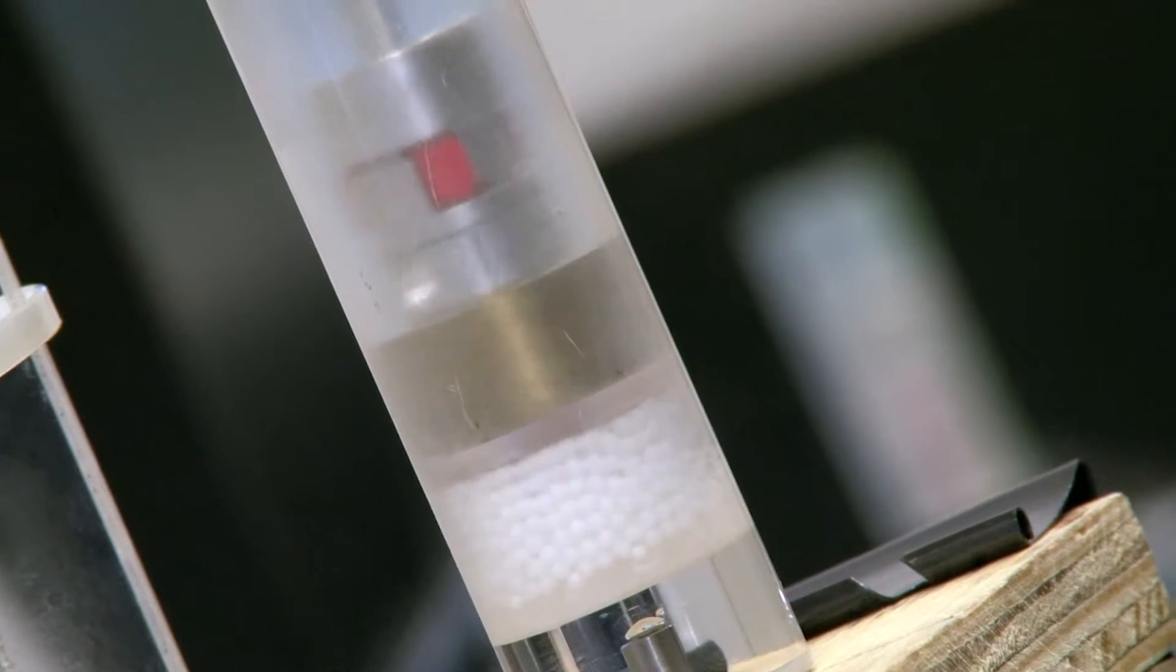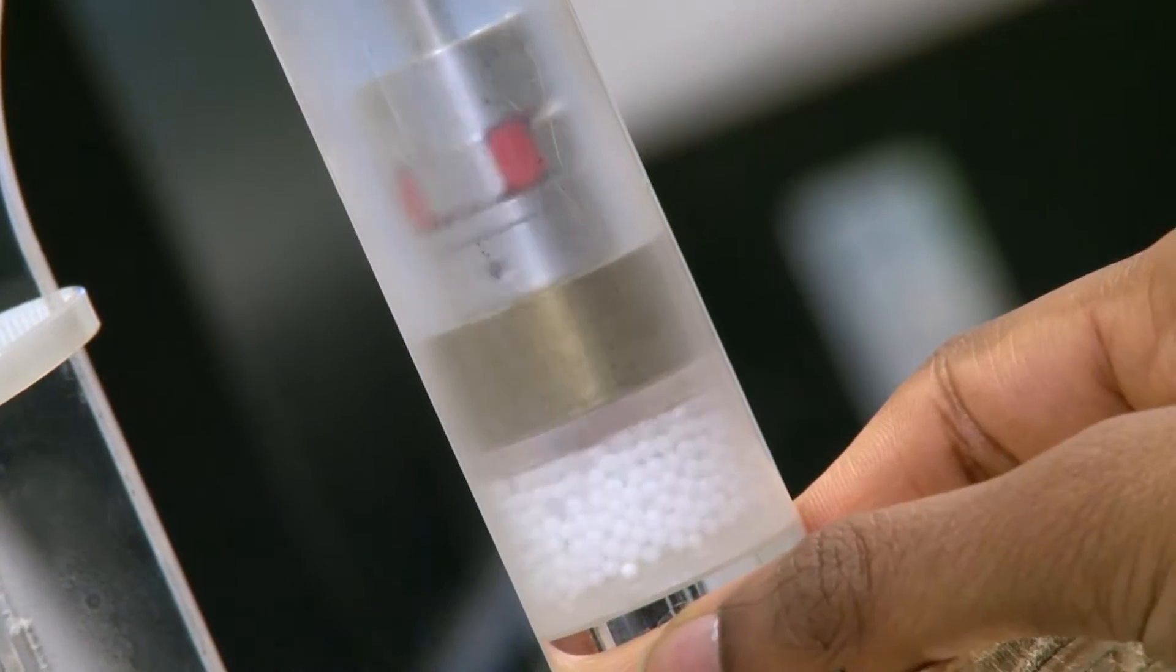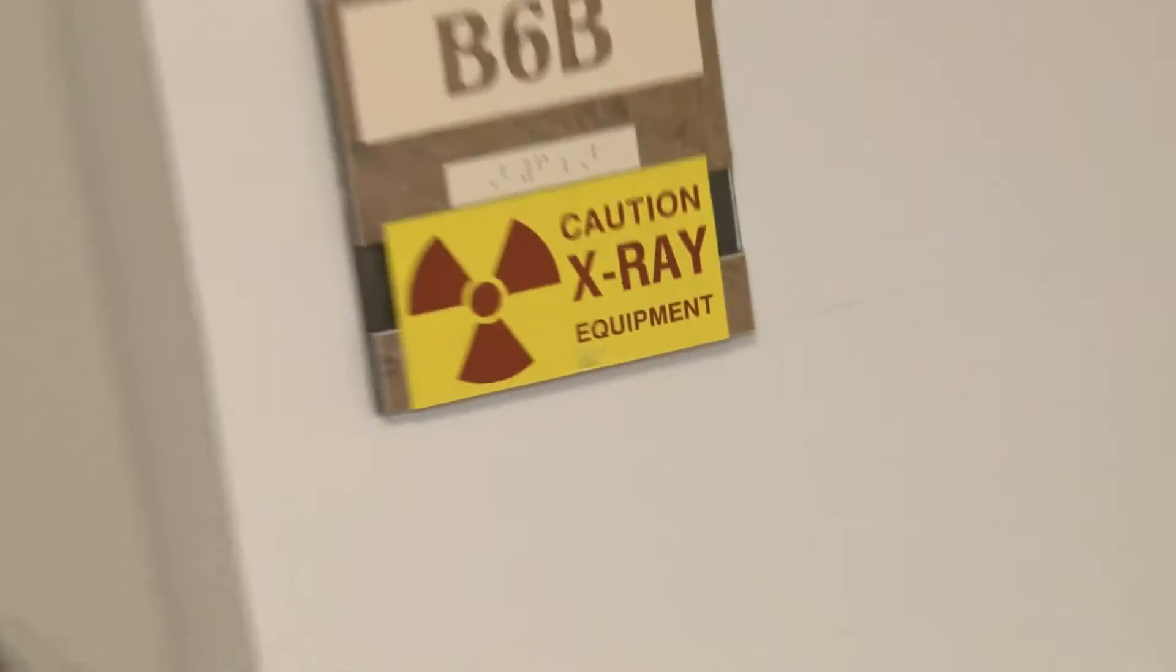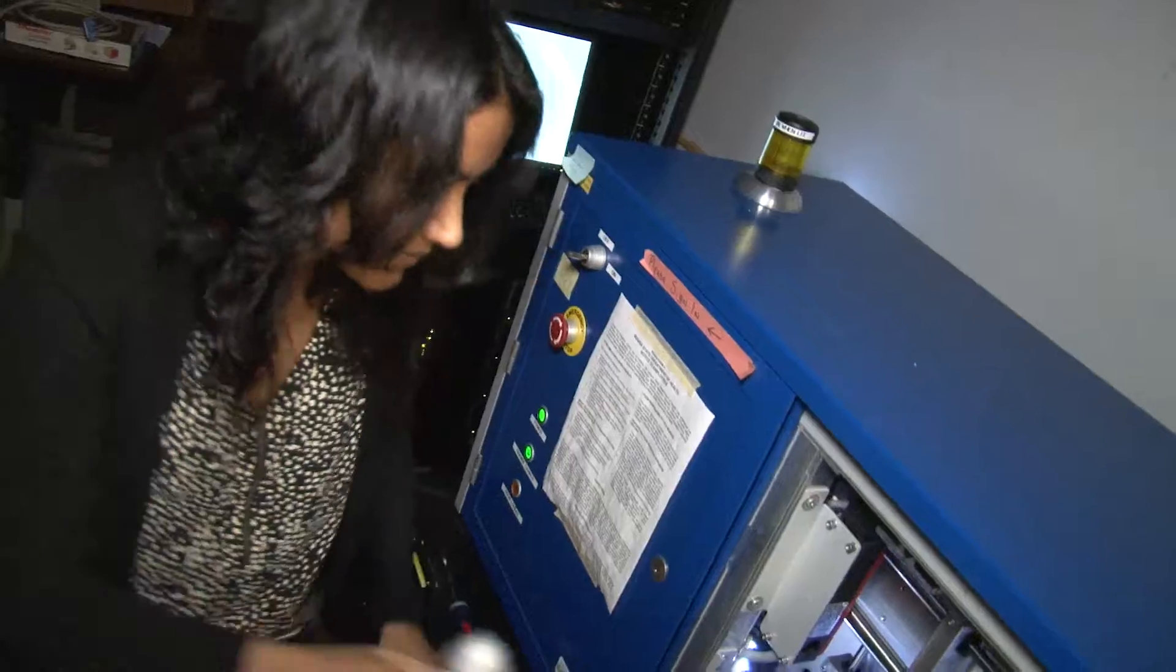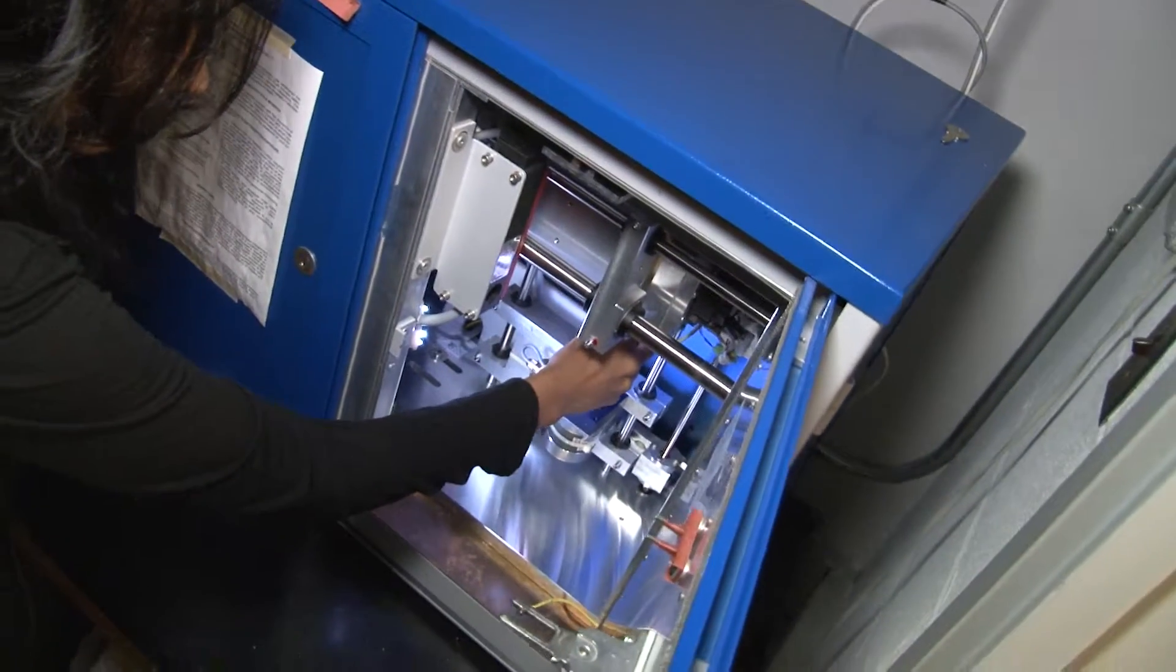You can't really see inside this because it's opaque in nature, and that's why we use X-ray tomography—because you can actually see what's inside. We can track the liquid, exactly where it is, without having to destroy the material.